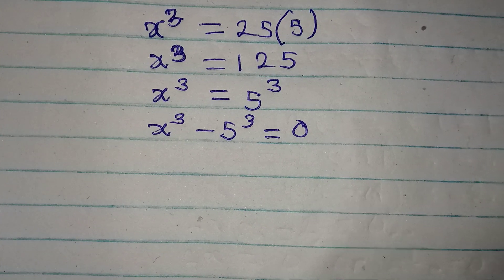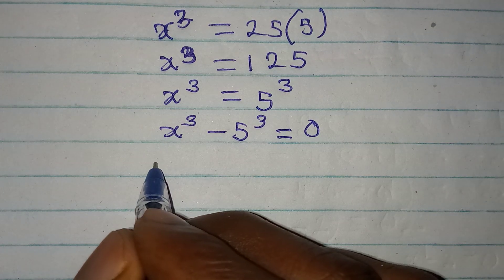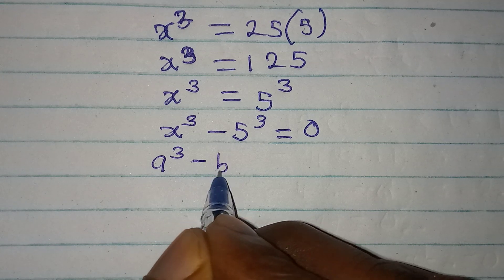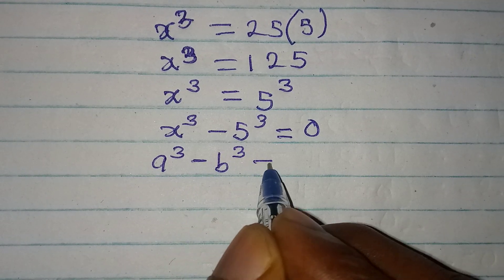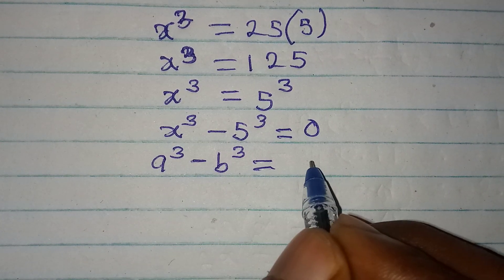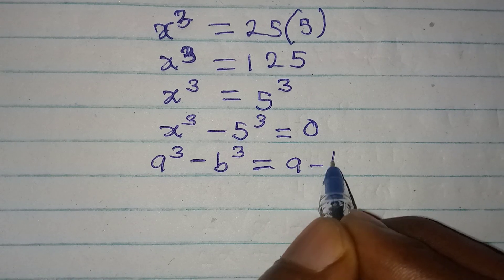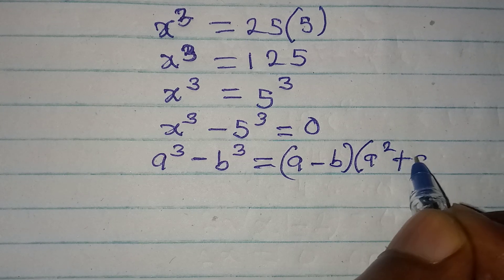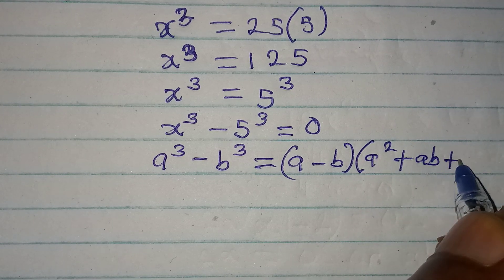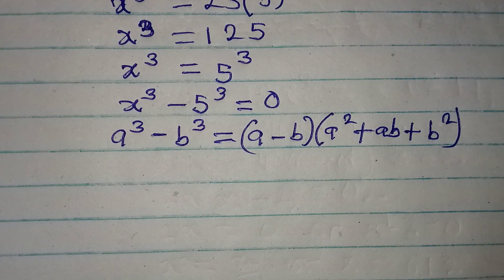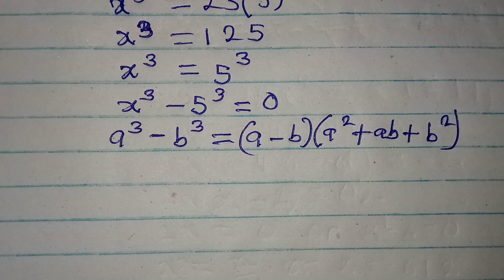Now remember this standard formula: if you have a to the power of 3 minus b to the power of 3, this will give you a minus b, multiplied by a squared plus ab plus b squared.